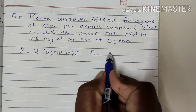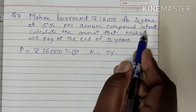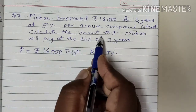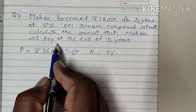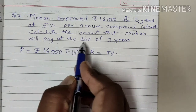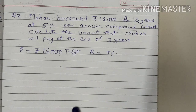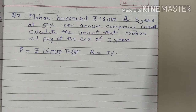The rate of interest is 5% per annum, compounded. Calculate the amount that Mohan will pay at the end of 3 years. Students, we will try to solve this question by using the formula method. We will use the formula method to solve this question.